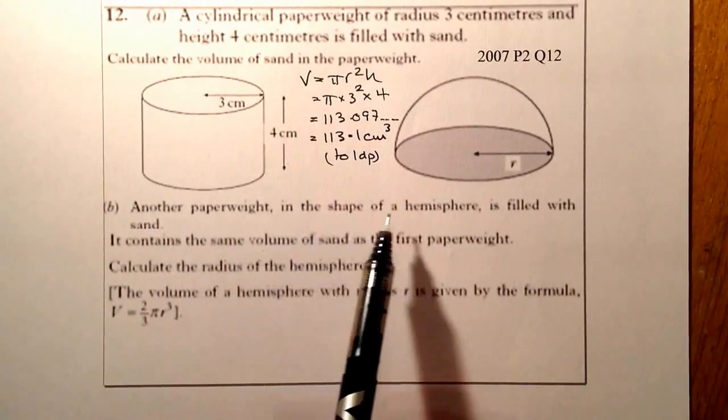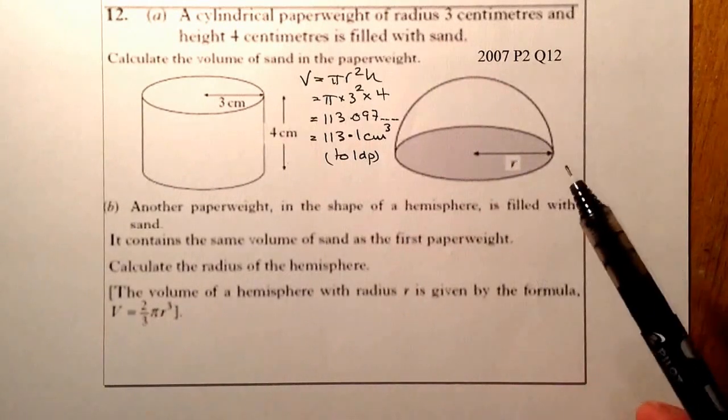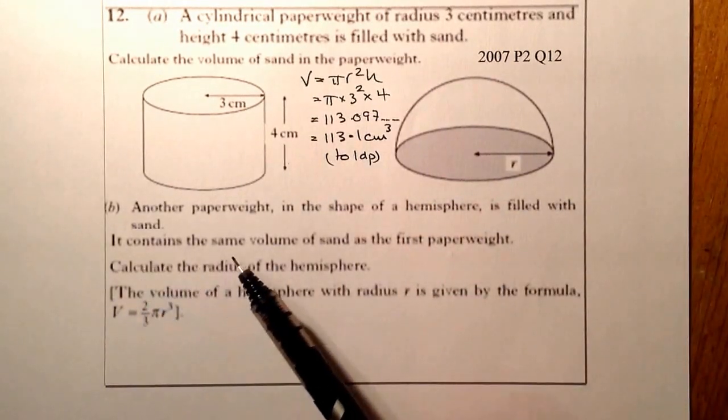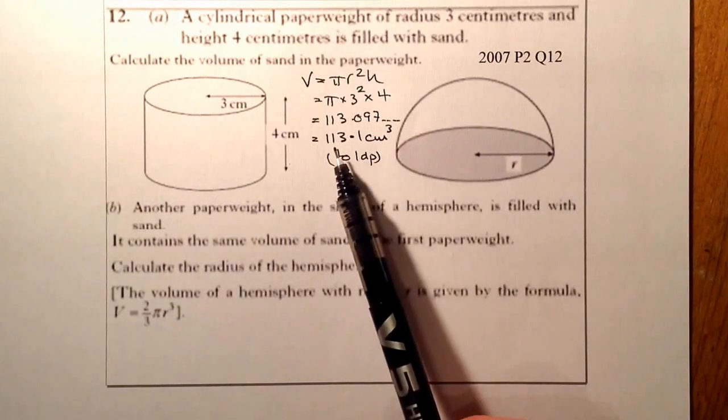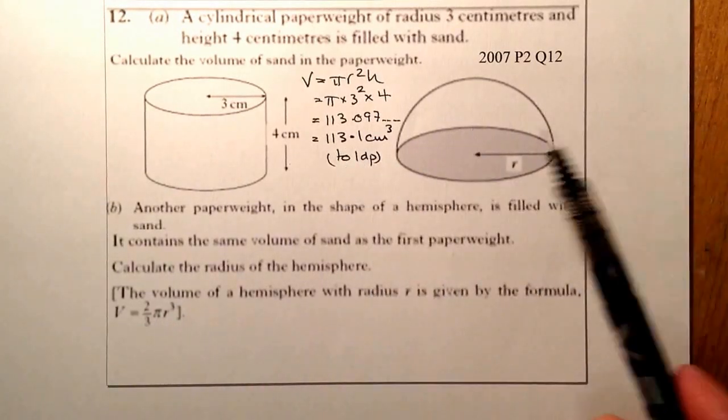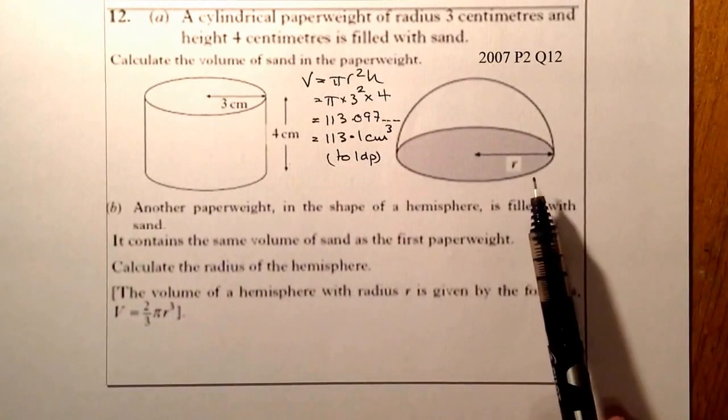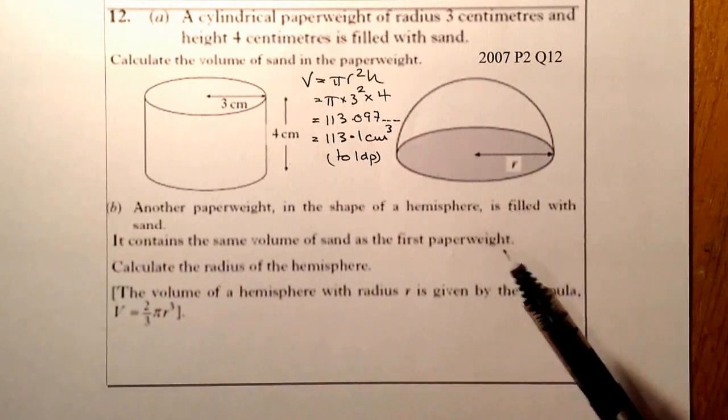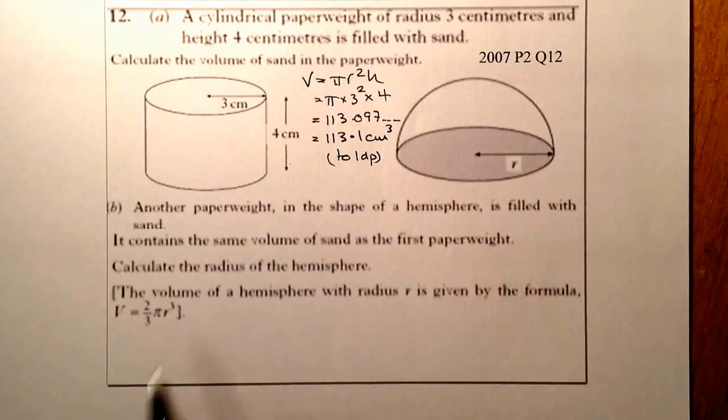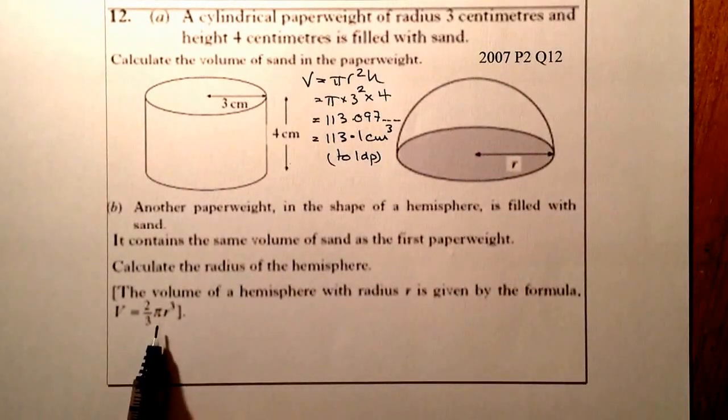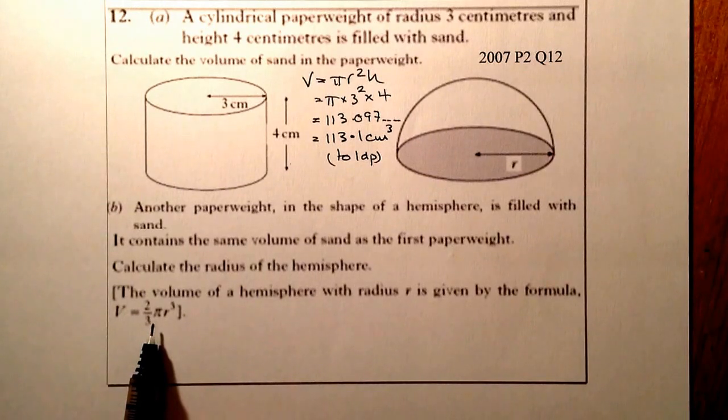Another paperweight in the shape of a hemisphere is filled with sand. It contains the same volume of sand as the first paperweight, so the volume in there is going to be 113.1. Calculate the radius of the hemisphere. With this type of question, we're going to use the formula and work backwards. We're given the formula here.